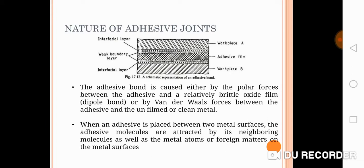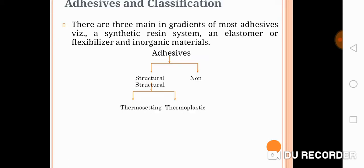When placing the adhesive between two surfaces, the adhesive molecules are attracted by the neighboring molecules — which are the metal atoms — and that is how the bond takes place. There is no metallurgical bond created; only polar or van der Waals bonding is happening.